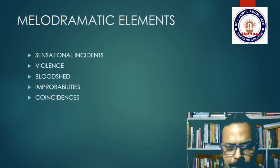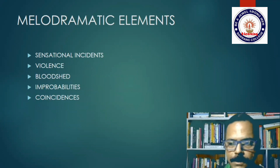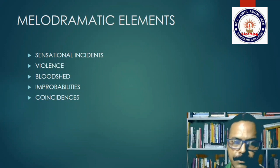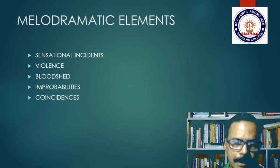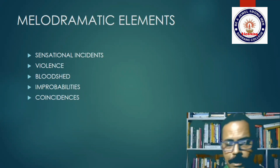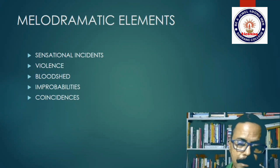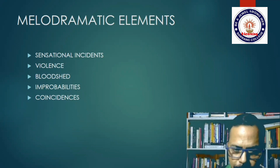The Duchess of Malfi is a Jacobean play and conforms to many of the run-of-the-mill melodramas of that period. In the Jacobean period there was a decadence, and melodramatic plays flourished. The Duchess of Malfi also has melodramatic elements such as sensational incidents, a lot of violence and bloodshed, and — more importantly — a number of improbable incidents and coincidences.